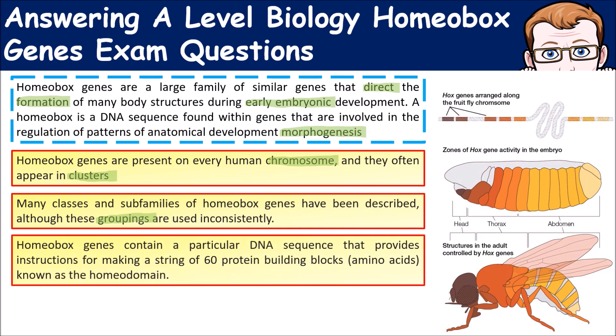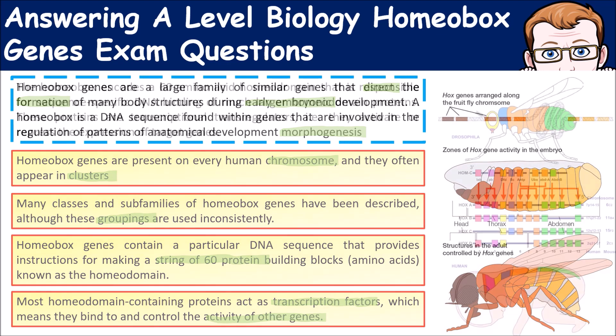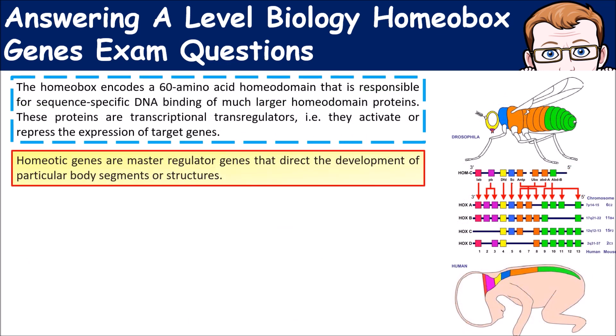Homeobox genes can contain particular DNA sequences that provide instructions for making a string of about 60 proteins — we call that a homeodomain. Most homeodomain-containing proteins act as transcription factors, which means that they bind and control the activity of other genes.